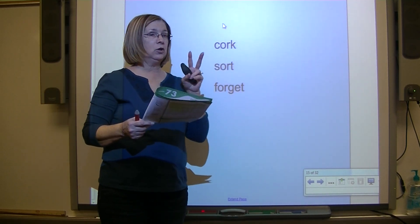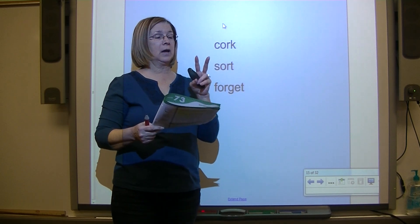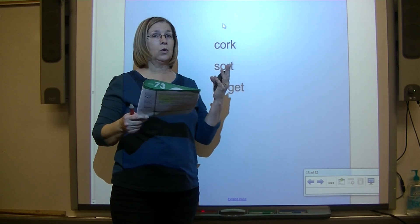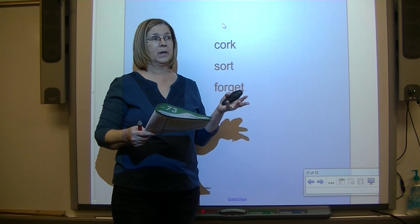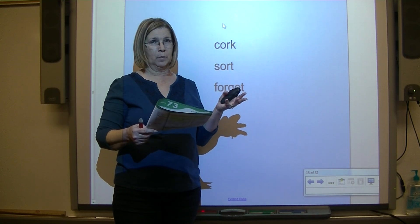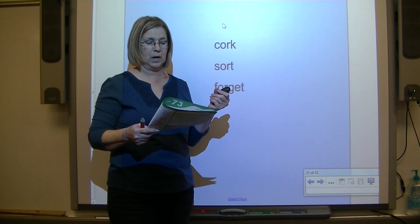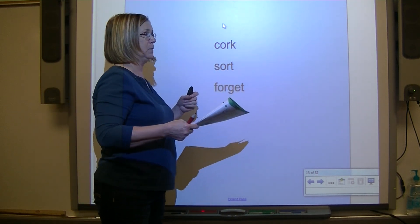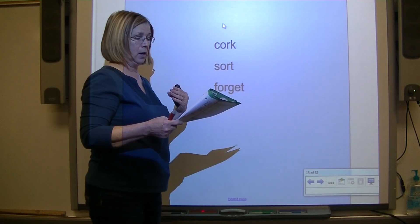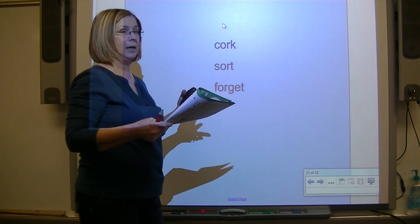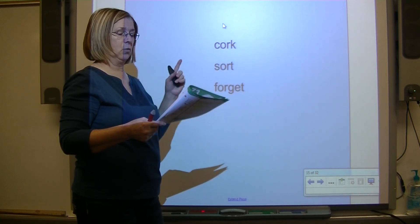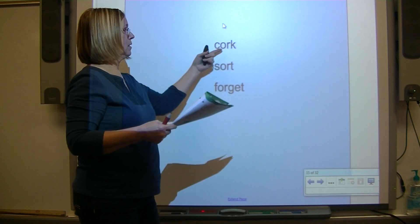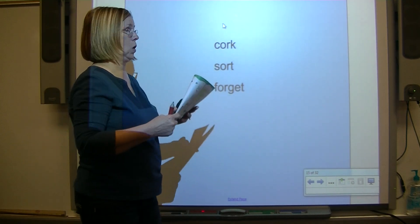These two letters come together to make an unexpected sound - what do we call that? A combination. Two letters that come together to make an unexpected sound are called a combination. How do we code a combination? We put an arc under it. This is combination O-R.